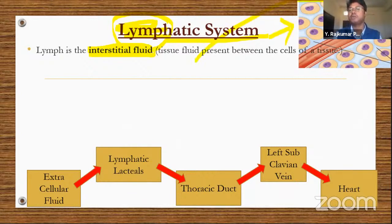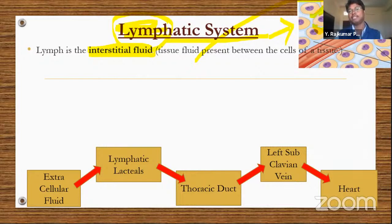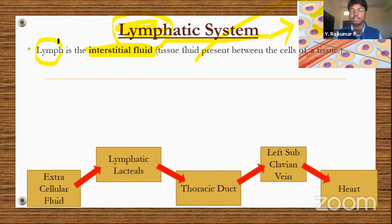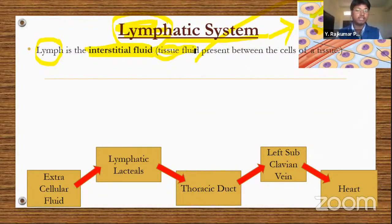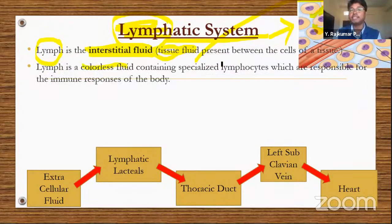In the diagram you can see cells with spaces between them — this interstitial space is filled with a fluid matrix called interstitial fluid, which is called lymph. Lymph is also called tissue fluid. If fluid is inside the cell it is cytoplasm; fluid between two cells is lymph.